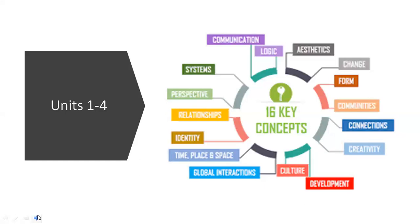For instance, in Unit 1, we might focus on communication — characters' ability to communicate with one another — or connections, the connections that people formulate with one another through experiences. Or even creativity, finding solutions to existing problems. Another possible key concept is perspective — a person's or a character's point of view. To summarize, the four key concepts covered in English Literature and Language are communication, connection, creativity, and perspective.